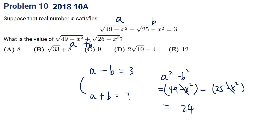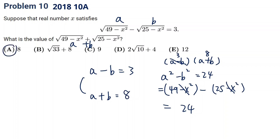This needs some experience and observation. So a squared minus b squared equals 24. And since this equals (a minus b) times (a plus b), and a minus b is 3, then a plus b equals 24 divided by 3, which is 8. So 8 is our answer.